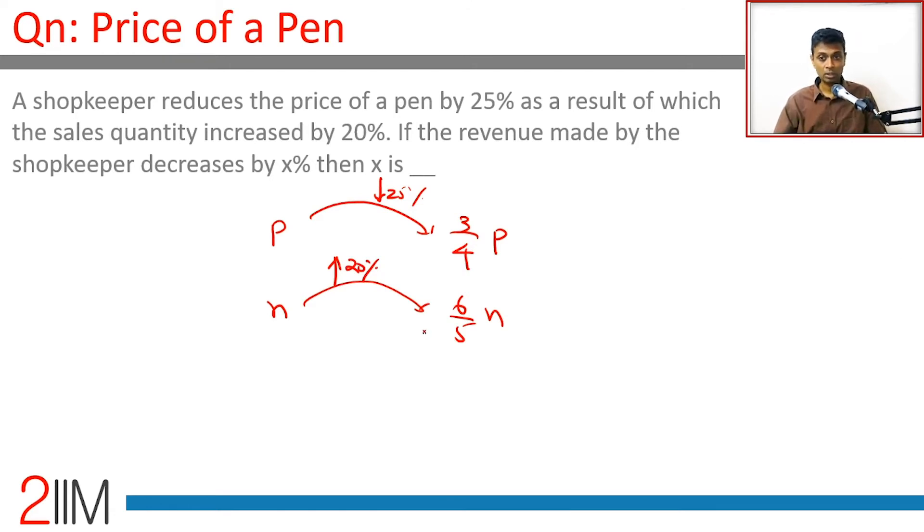The revenue originally was np. Now it is three by four p into six by five n, which is 18 by 20 or 9 by 10 np. np becomes 9 by 10 np.